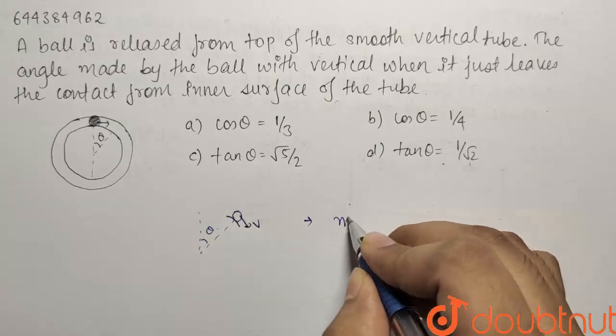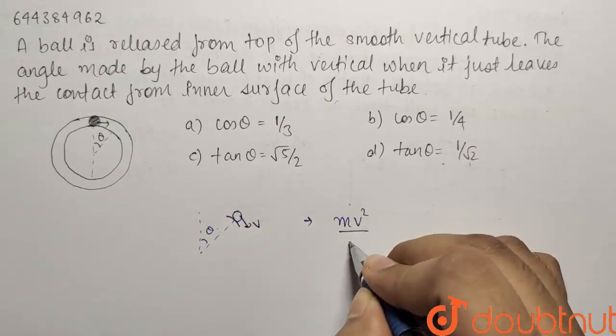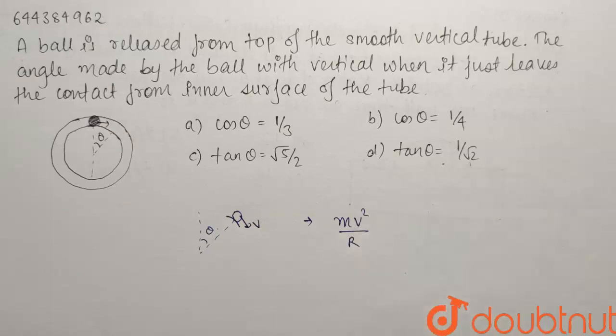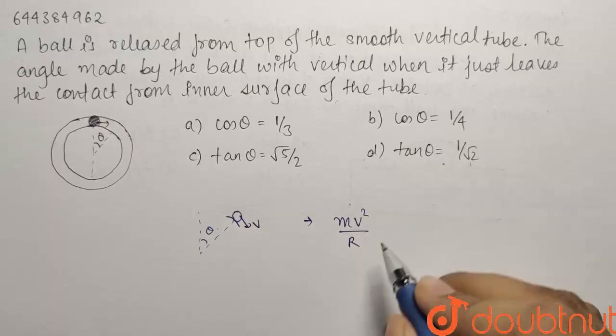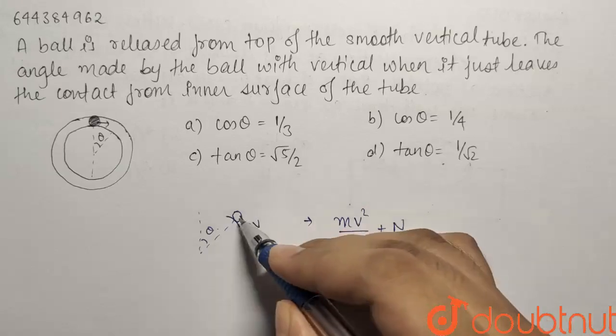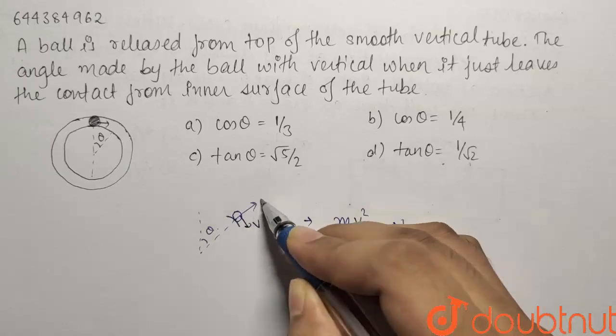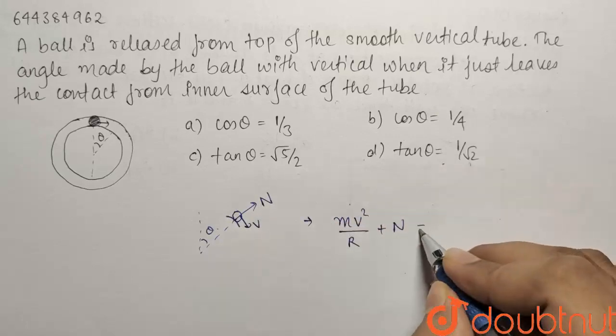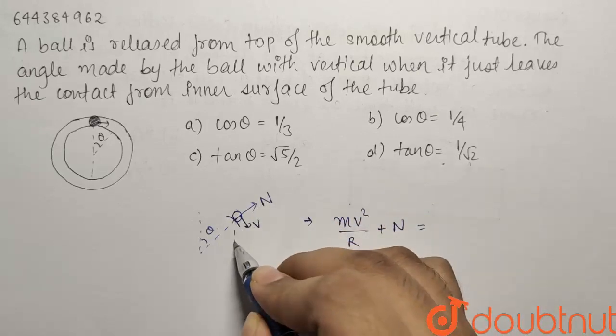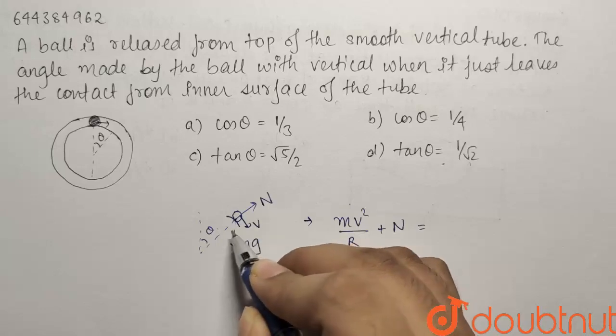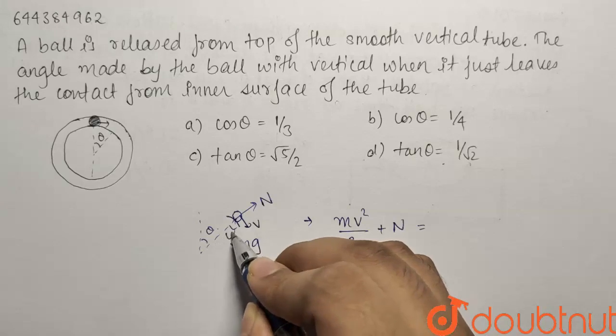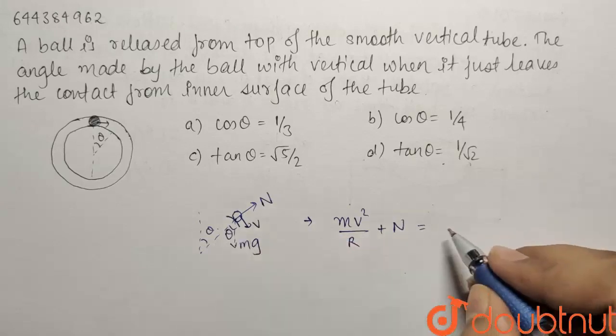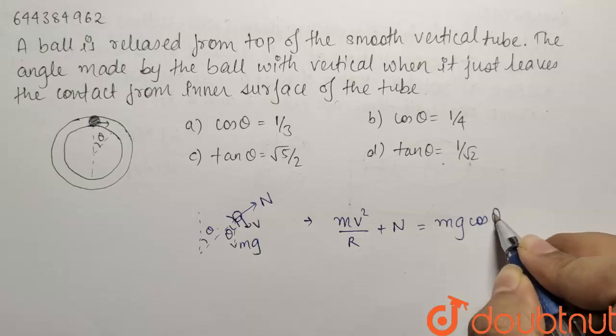It will be equals to mv square by r that is the centripetal force plus the normal. Both of these will be acting in the downward direction. This is your normal and similarly mv square by r is going to act in the same direction. Both of these will be balanced by your mg's component along the normal. This is theta. We know that this is going to be theta as well. So they will be balanced by mg cos theta.